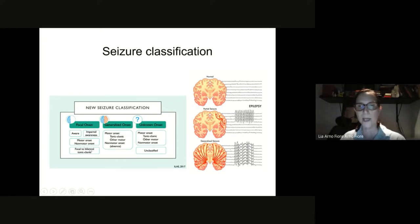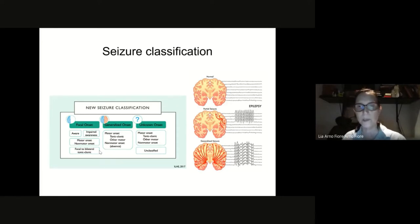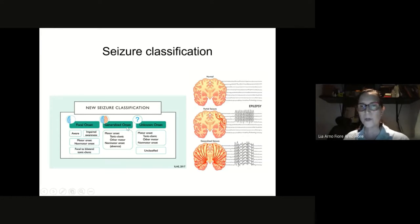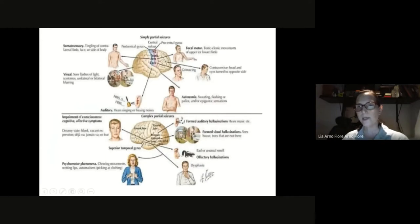With focal onset, you have either a motor onset or a non-motor onset. By motor onset we mean that the motor activity is exuberant, not only a few automatisms. Focal seizures can evolve to bilateral tonic-clonic — what we used to call secondary generalized seizures, we now call focal to bilateral tonic-clonic. For generalized onset, you also have motor onset or non-motor onset.